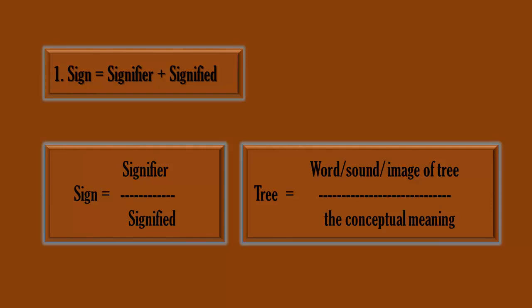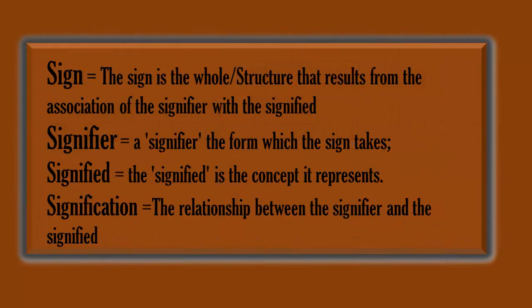A sign is any individual unit of a language. The signifier is the word, sound, or image, whereas the signified is the conceptual meaning that comes to our mind. The sign is the whole structure that results from the association of the signifier with the signified. The signifier is the form which the sign takes, and the signified is the concept it represents. The relationship between the signifier and the signified is termed signification.